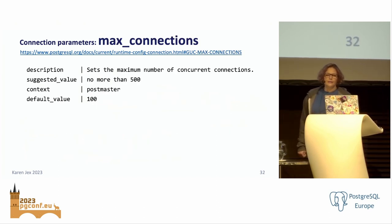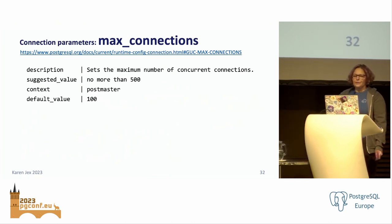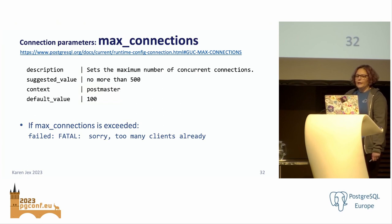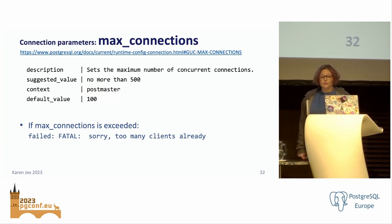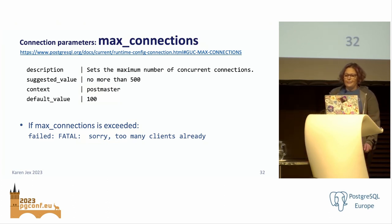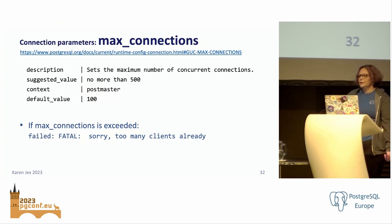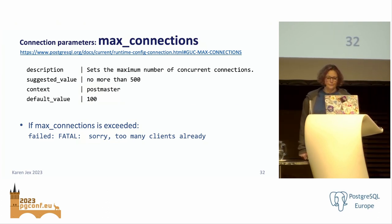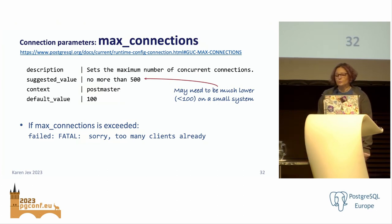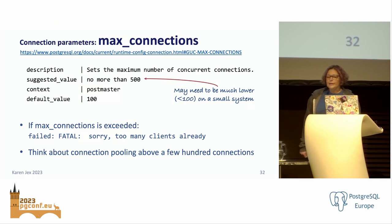max_connections specifies the maximum number of concurrent client connections; the default is 100 on most systems. If max_connections is 100 and you're the 101st person trying to connect, you'll get an error. You might be tempted to set max_connections to a really high value, but remember that each DB connection needs a certain amount of resource, and Postgres usually works best with up to just a few hundred concurrent connections. If you want or need many hundreds or thousands of connections, you'll need to start looking into connection pooling.